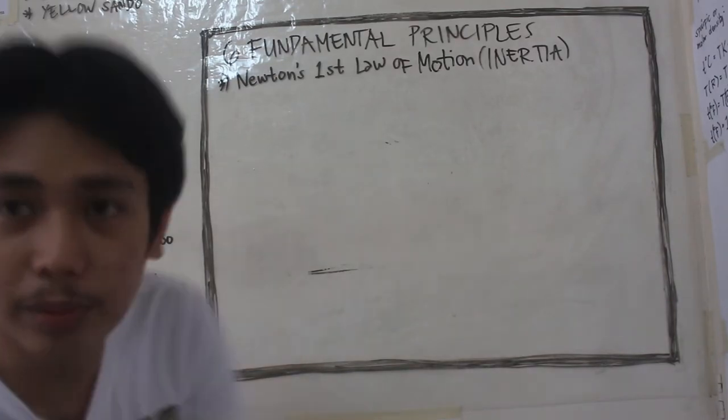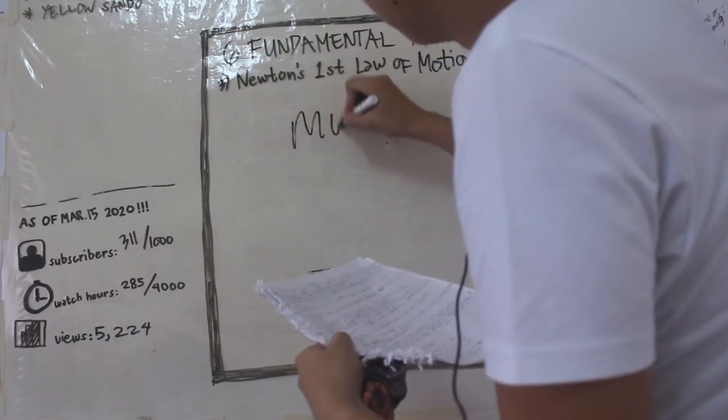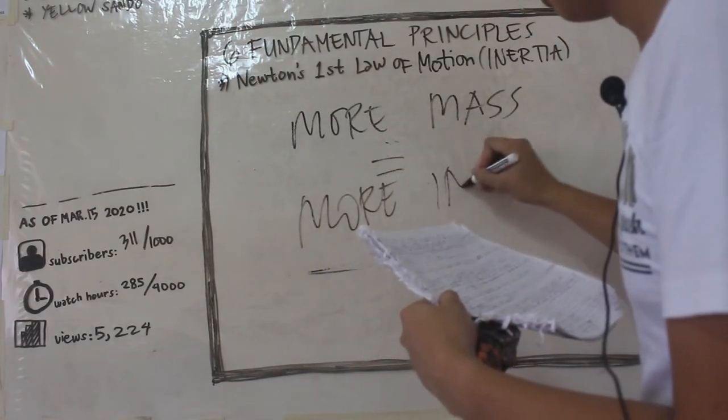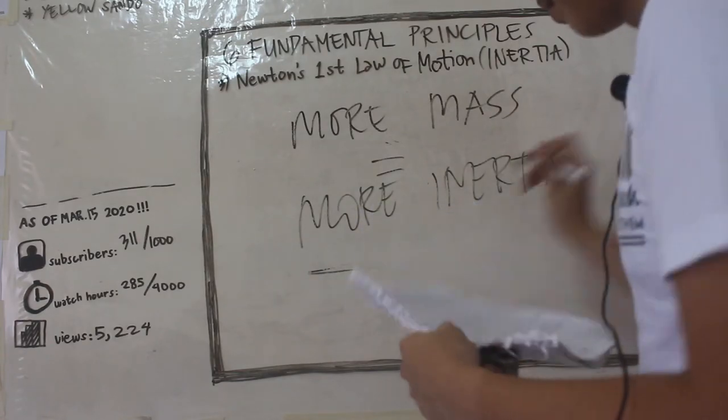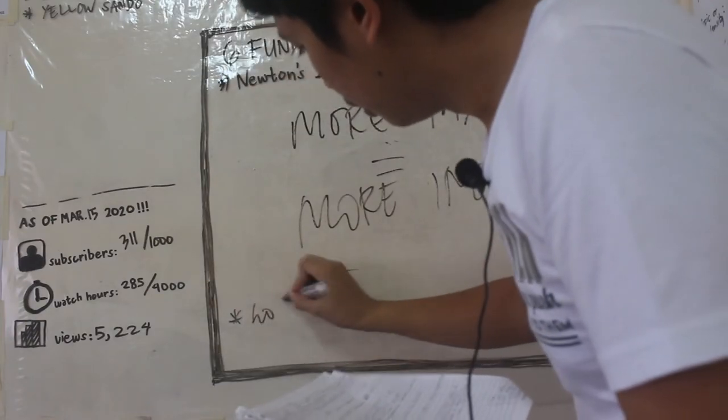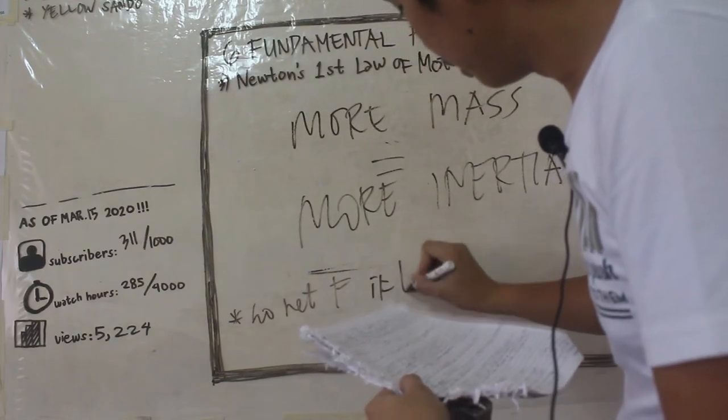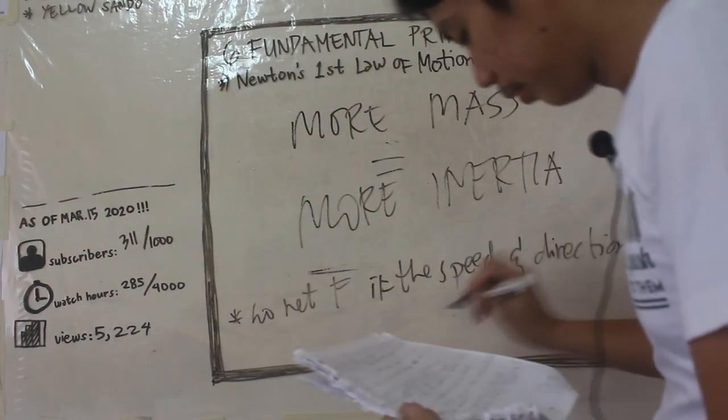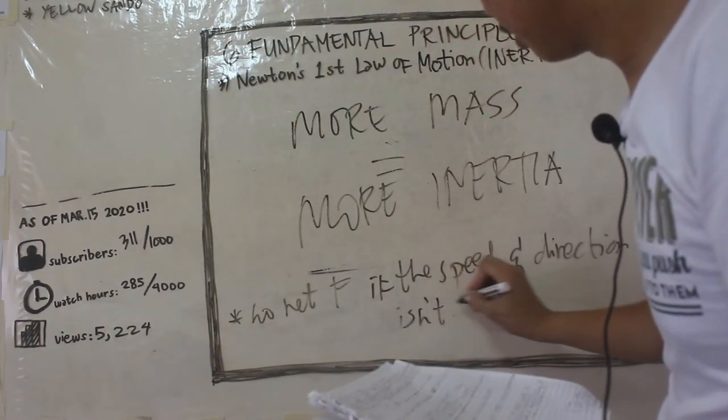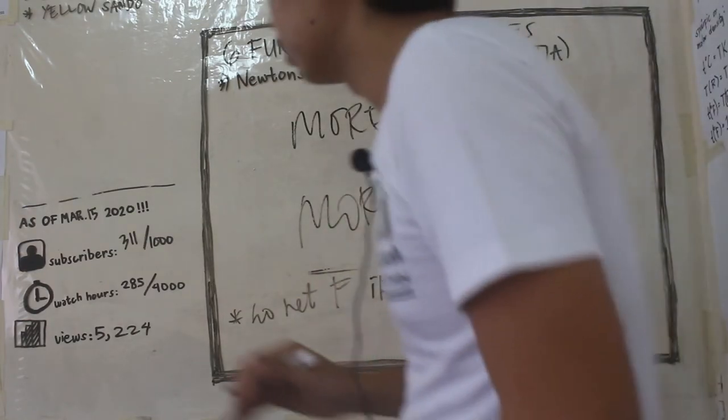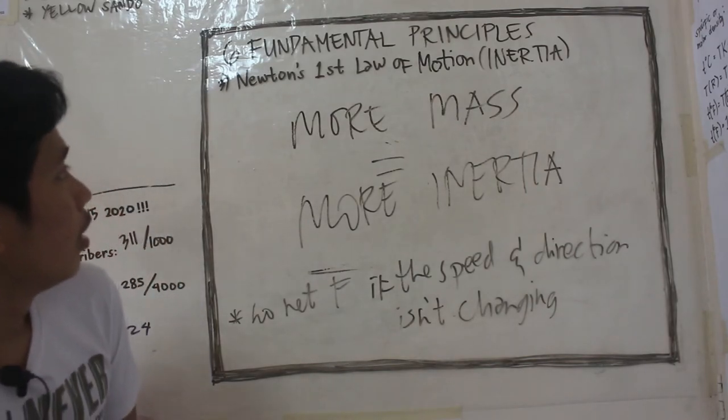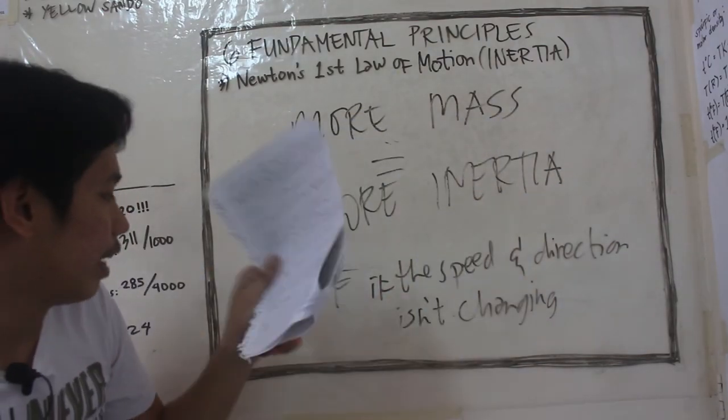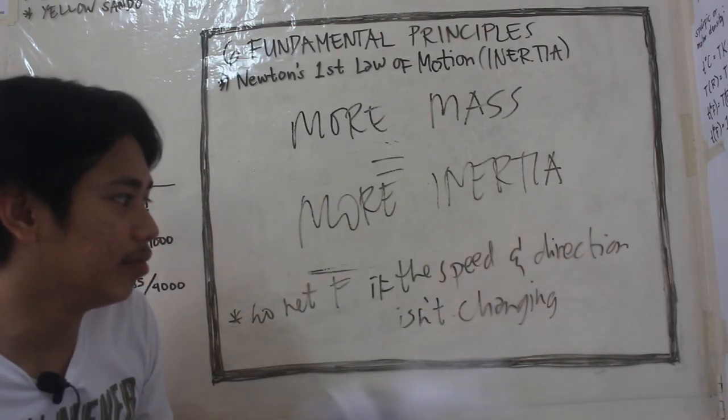Ano lang, guys, note mo lang, in-note nyo lang din to, na more mass is equal to more inertia. And, also, no net force if the speed and direction is not changing. So, ito, take note nyo to dito sa law of motion ni Newton, sa first law of motion ni Newton, na the more mass correlates to more inertia, and there is no net force if the speed and direction is not changing.